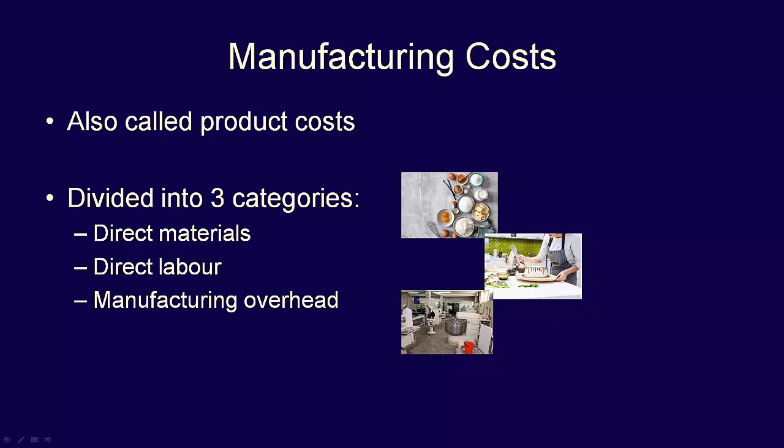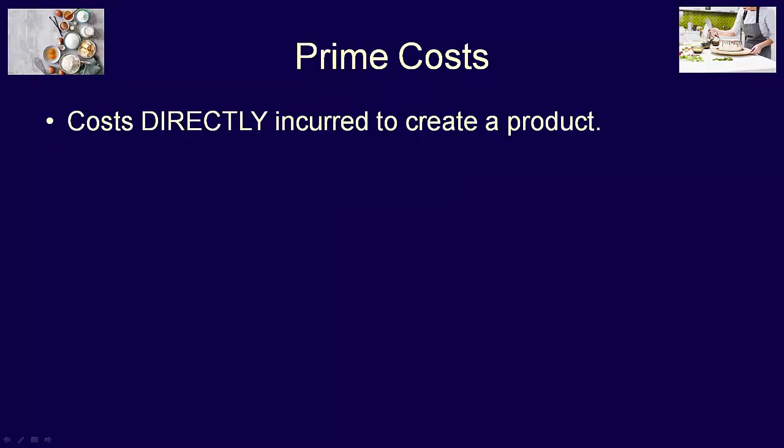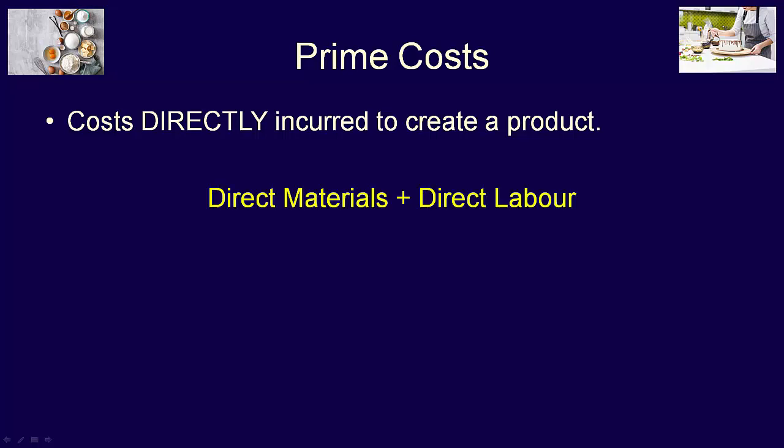These three costs can be grouped into prime and conversion costs. Prime costs are costs which are directly incurred to create a product — note the word direct — which indicates that prime costs are made up of direct materials plus direct labour. They are considered the main cost of the product, consisting of the directly traceable raw materials which we use to construct the product, and the direct labour, the workers who directly work to produce the product.